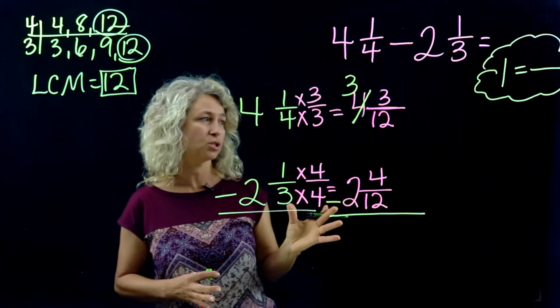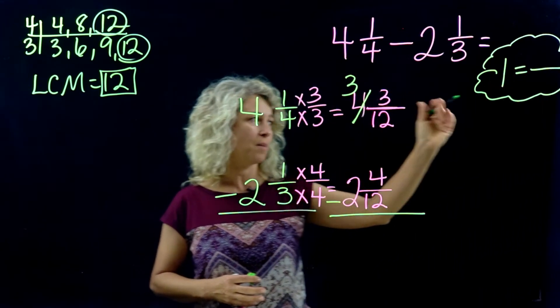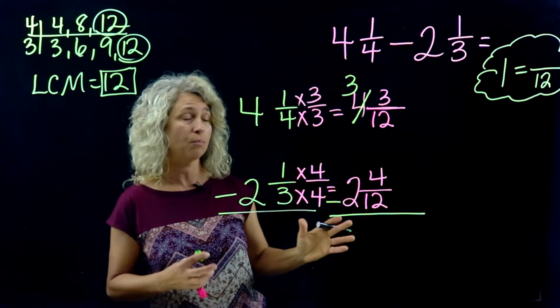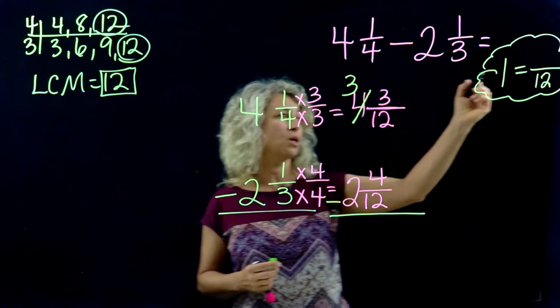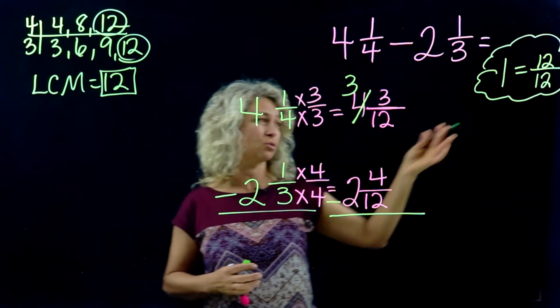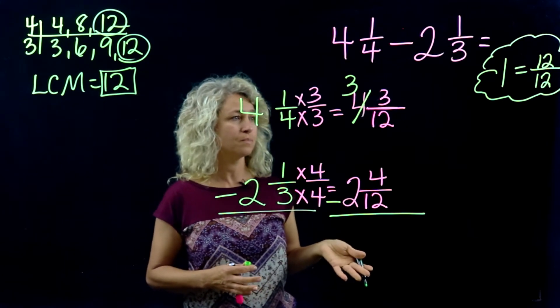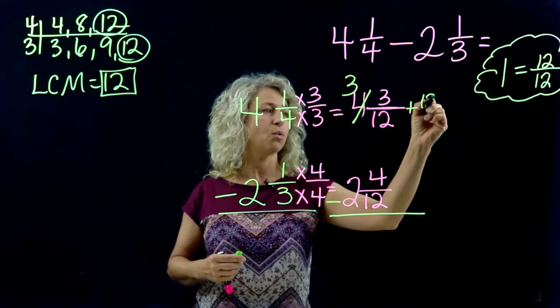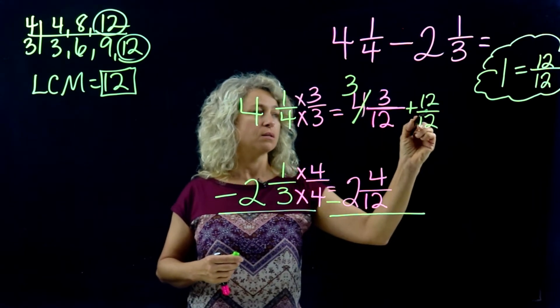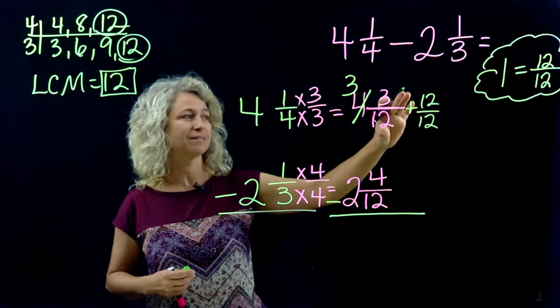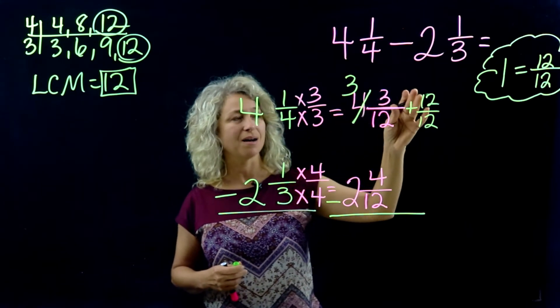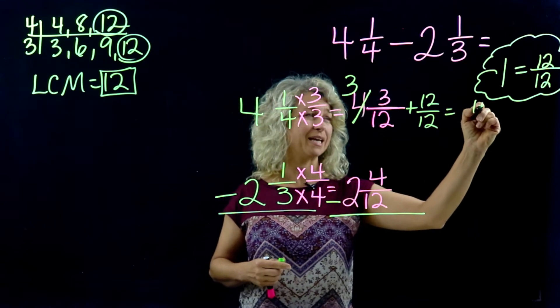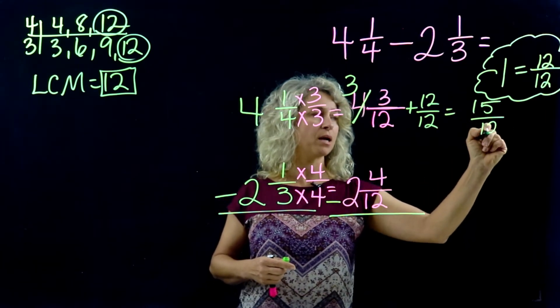Now how can the whole number 1 become a fraction? It has to have that same denominator, 12. And the only way to make a fraction mean the number 1, the whole number 1, is to have 12 on top, because 12 divided by 12 is the whole number 1. So with that in mind, you're adding 12/12 to this fraction to add that whole number. So 12 plus 3 is 15, and the denominators always just stay the same.